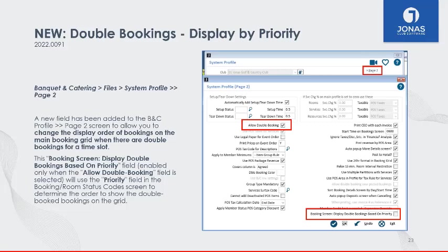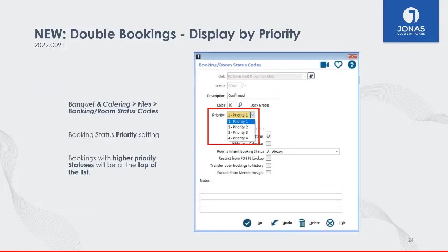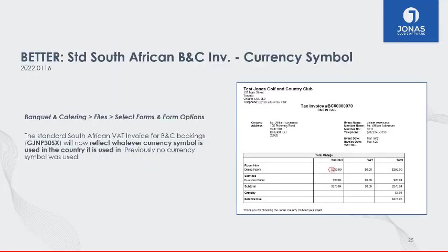Enabling this field uses the priority field in the Booking/Room Status Code screen to determine the order in which to display double bookings on the grid. This field is available after you've enabled Allow Double Booking. Previously, double bookings were organized by booking number — whoever booked first appeared first. Now you can choose to organize by booking number or by priority, depending on what works best for your club.